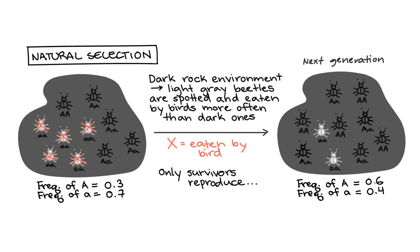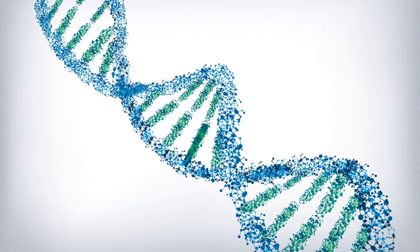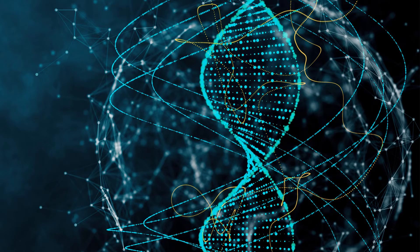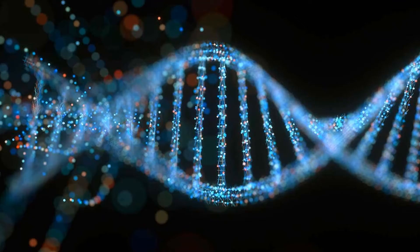In general, evolution is any change in the characteristics of a population from one generation to the next. These characteristics are determined by the DNA in the cells of the individuals of the population. DNA is the genetic material passed from one generation to the next, containing the instructions for development, functioning, growth, and reproduction.